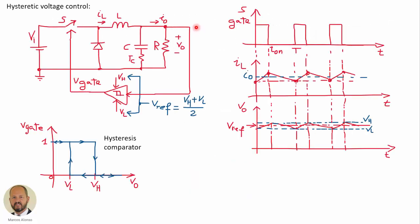The idea of hysteretic voltage control is to measure directly the voltage of the converter at the output and send this information into a hysteretic comparator. In this hysteretic comparator we have a reference voltage and two levels, the high level and the low level. With this we are controlling the on and off states of the switch using the output of this hysteretic comparator.